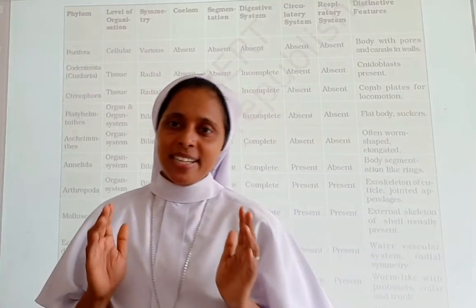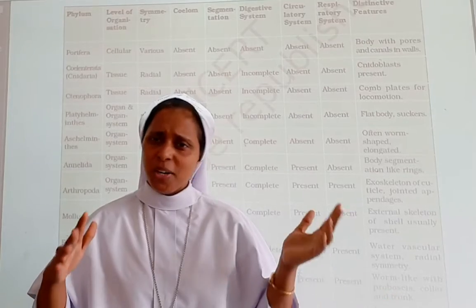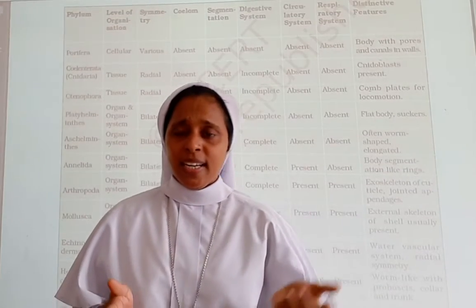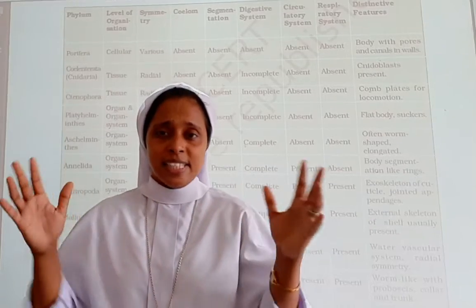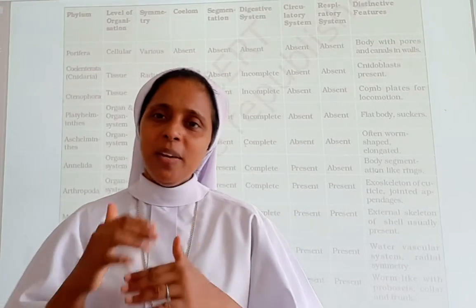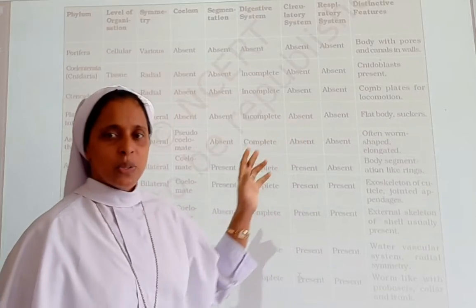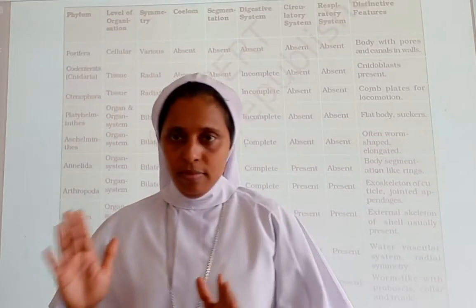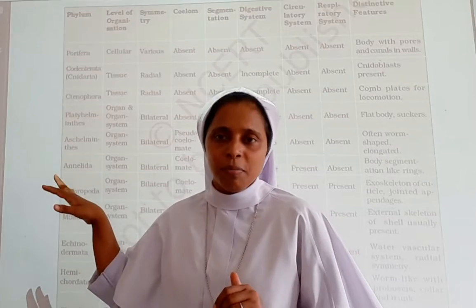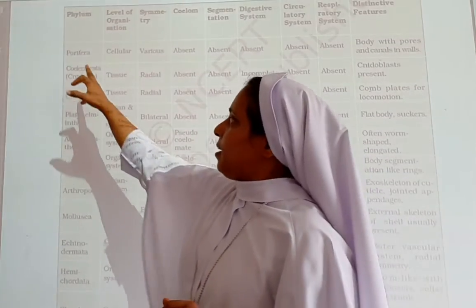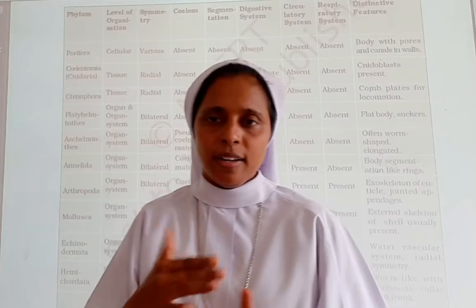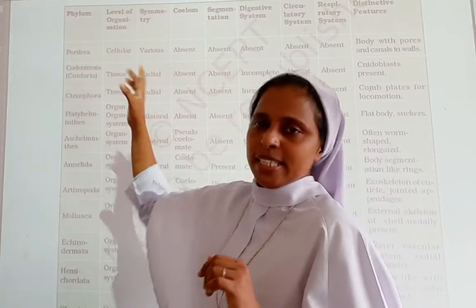Now you may be confused having learned so many phyla — non-chordates and chordates — with bilateral symmetry, coelom, respiratory system, and circulatory system. Here is a chart to help you revise easily. We will first look at the chart and then learn the phyla in one sentence using a trick.